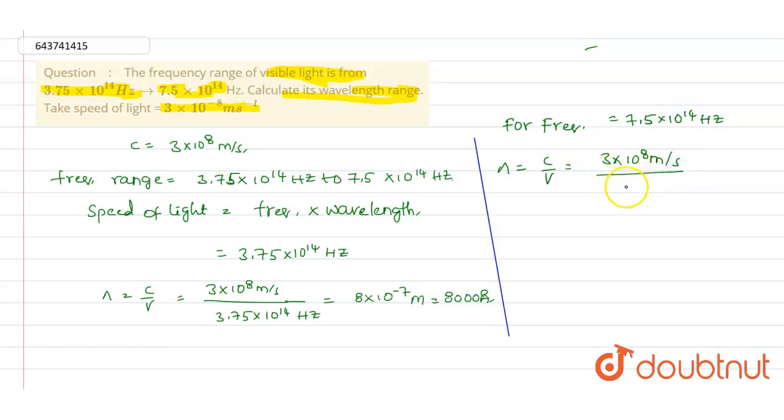This equals 4×10^-7 meters, which we can write as 4000 nanometers.